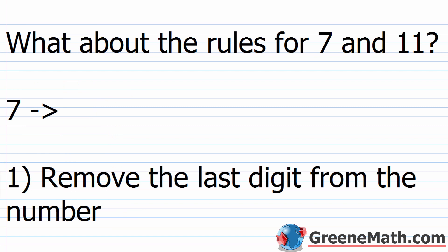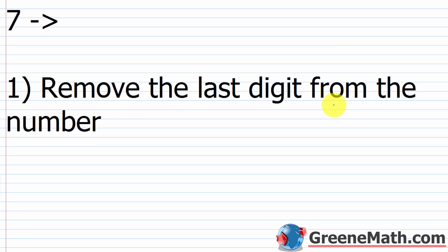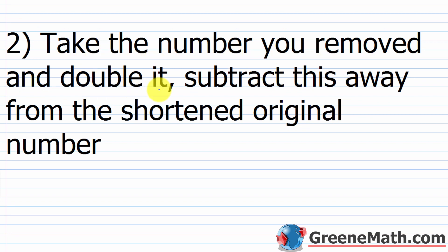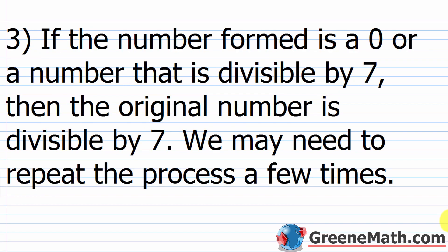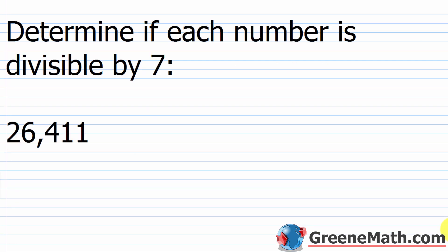So what about the rules for 7 and 11? A lot of teachers skip them, but if you practice them they're not that hard. For 7, there are steps to follow: first, remove the last digit from the number. Then double the removed digit and subtract it from the shortened number. You may need to repeat this process a few times until you have a number small enough to recognize as divisible by 7 or not.